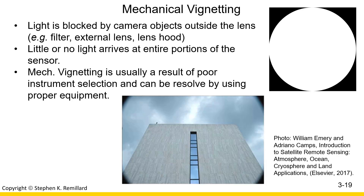Mechanical vignetting is an actual blocking of the light entering the camera, and usually it's an external object, like a filter that's been attached to the front lens, or an external hood, or some other external component, so that the image looks like this picture here where apparently some round thing was put at the entrance. That's what mechanical vignetting is — it's something that is usually avoided. I don't think this is very artistic, unless it really is what you want to see.